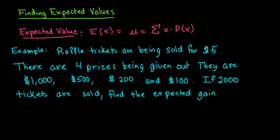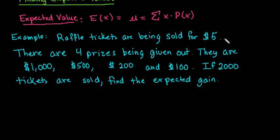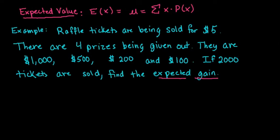For example, we're going to talk about a situation where raffle tickets are being sold for $5. There are four prizes being awarded or given out. They are $1,000, $500, $200, and $100. If 2,000 tickets are sold, we want to find the expected gain. We want to look on average how much are those people going to gain from this raffle.